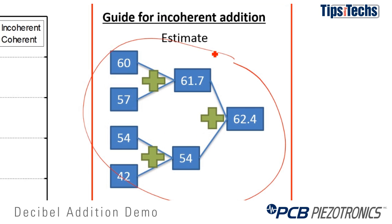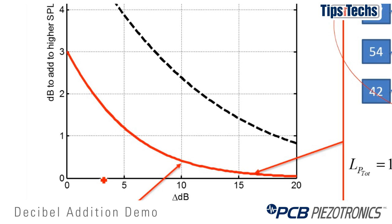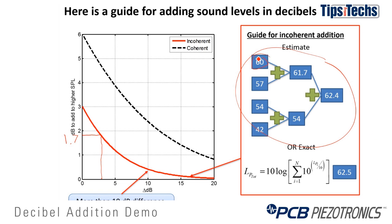We'll go through the first addition process to give you an example. Here we're adding 60 decibels and 57 decibels, so the difference is 3 dB. We go to our graph and add these incoherently. Up to the incoherent curve and then over to the left, we find a value of roughly 1.7 dB. That's what we add to the higher level, which would be 60 dB in this case. So the result of adding 60 and 57 is 61.7.